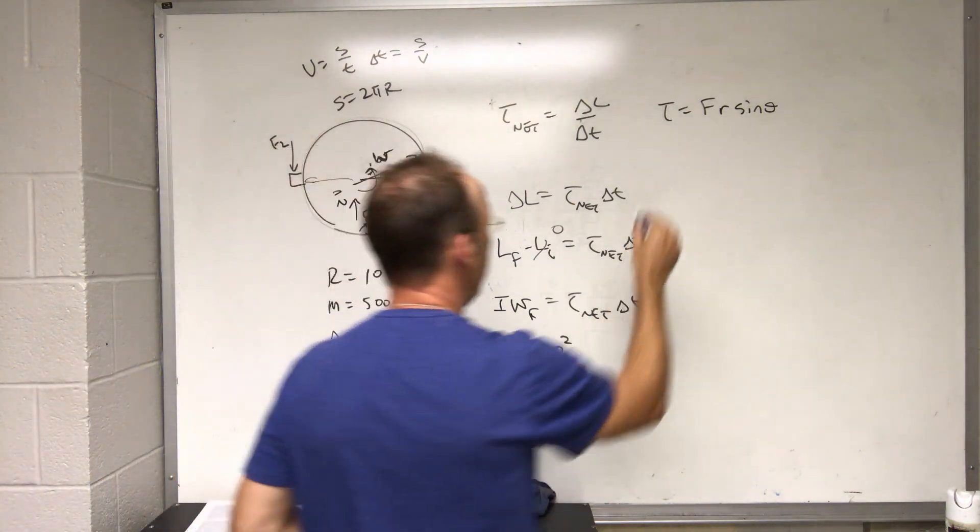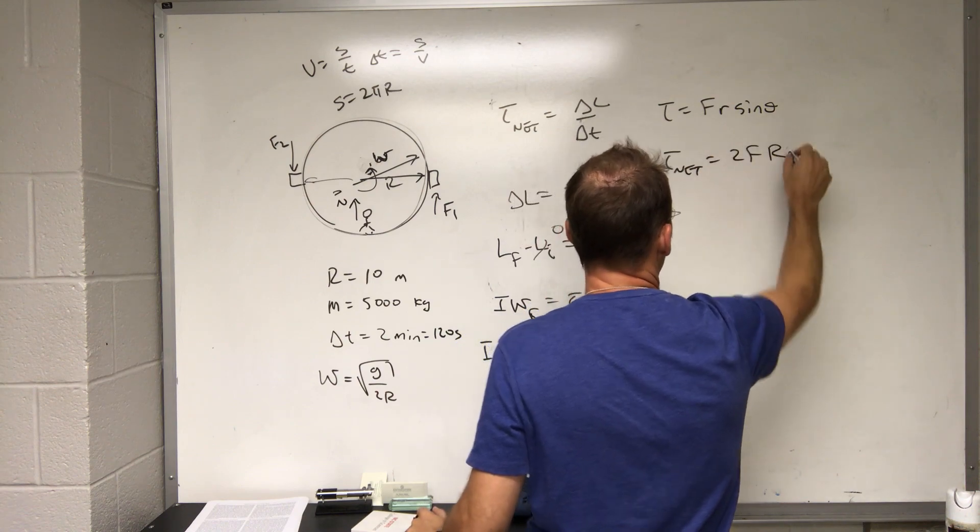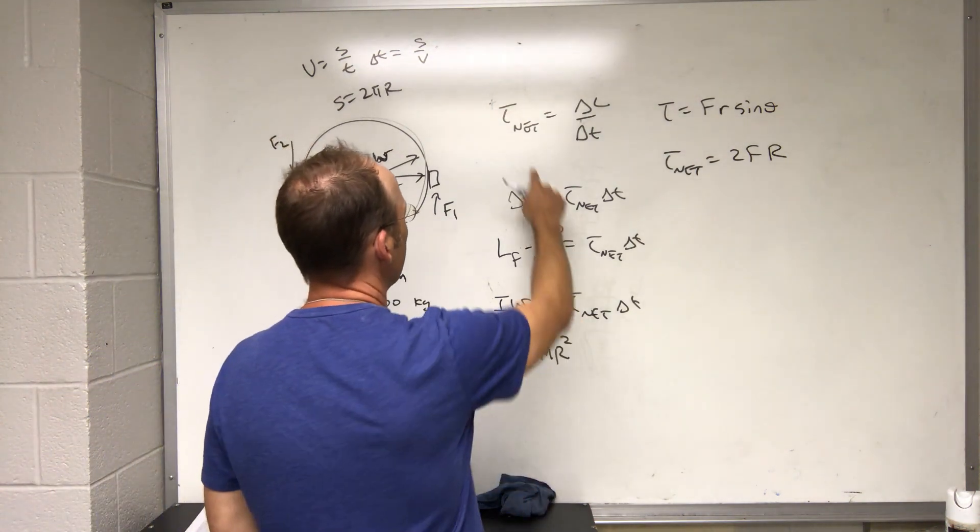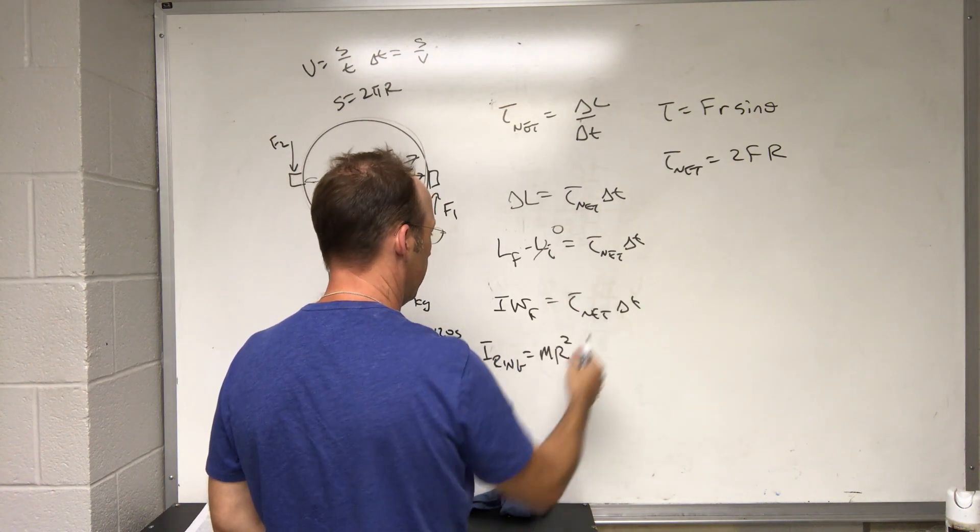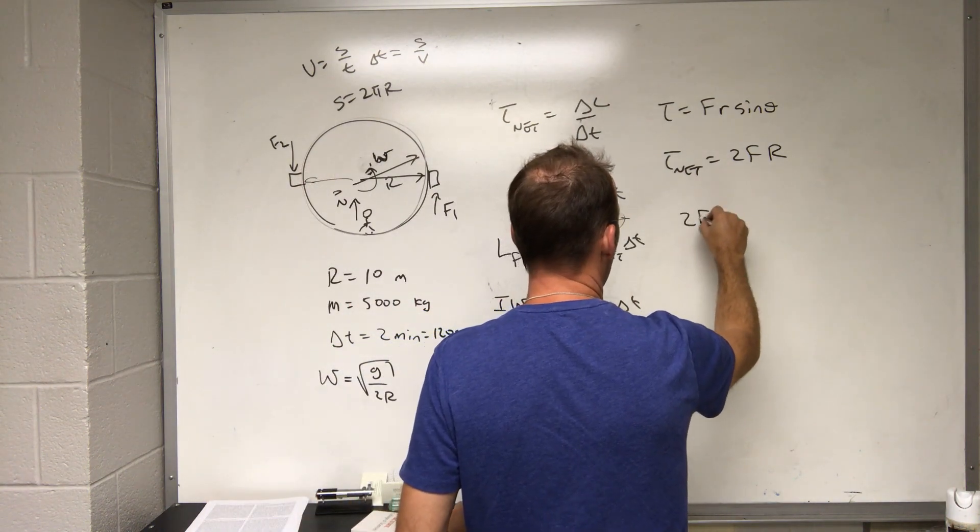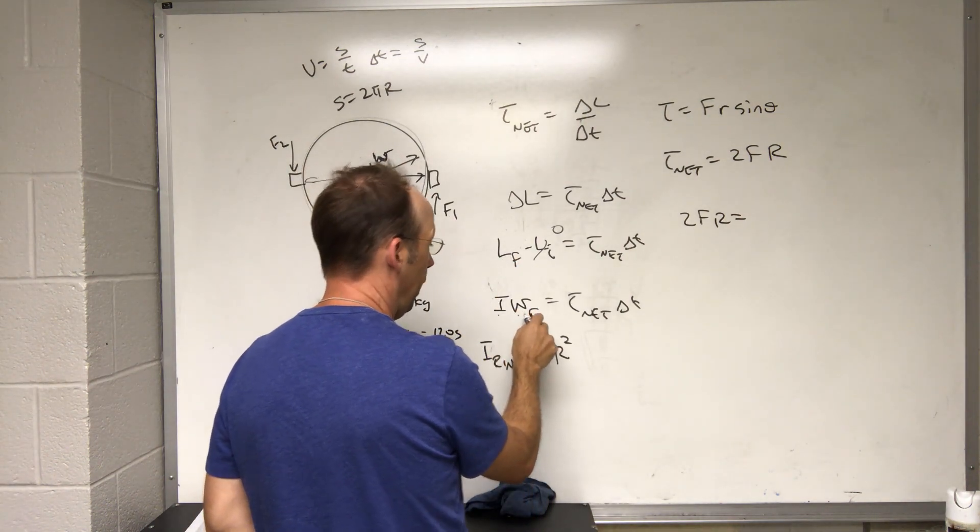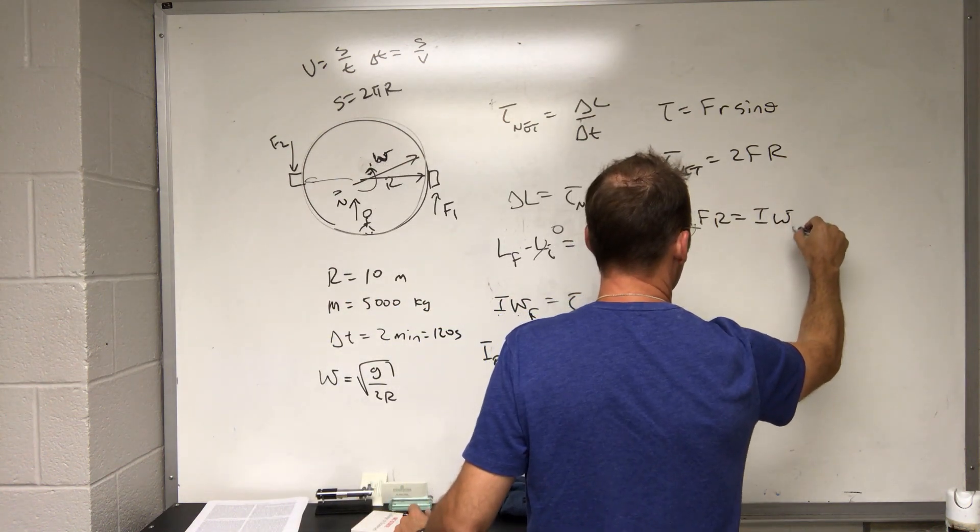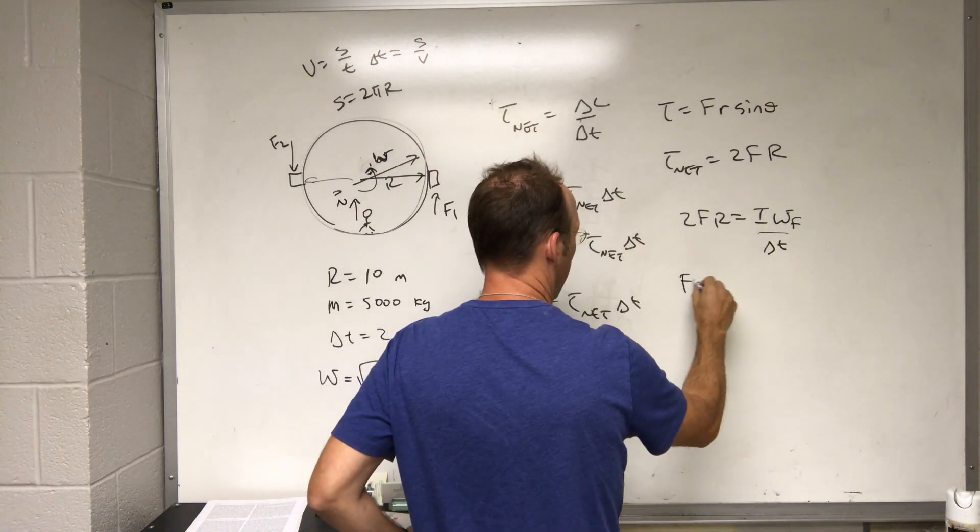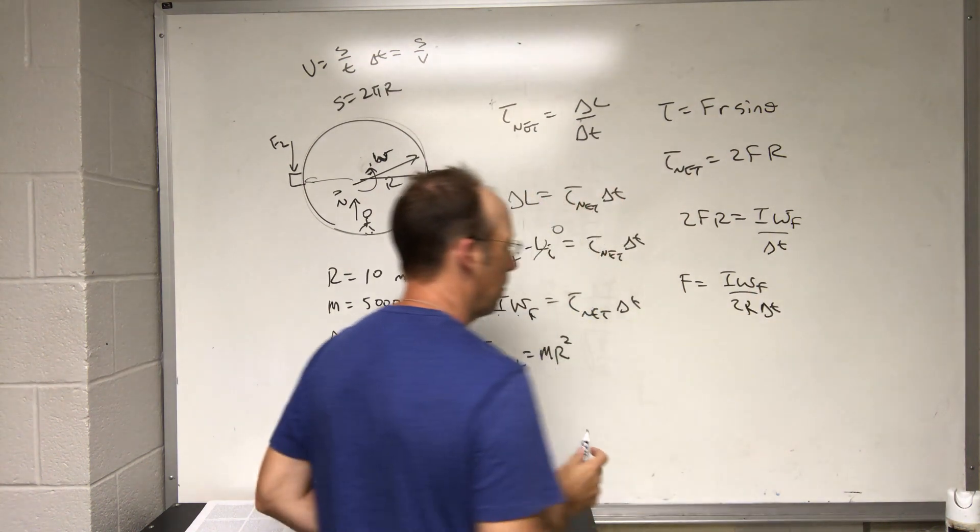And then I have the same thing over here. This would cause a positive torque, and so the net torque is going to be 2 f big r. And f is the force of the rocket, and that's what I want to solve for. So in fact I need to divide by delta t. Let's put this all together. So I have net torque is 2 f times r. The change in angular momentum is just going to be the final, which is going to be I omega f over delta t. Let's solve for f. F equals I omega f over 2 r delta t.